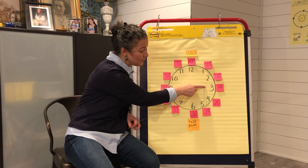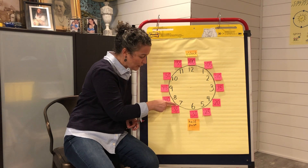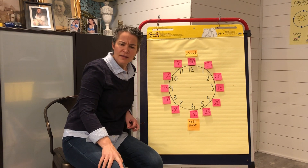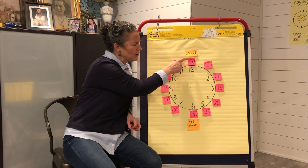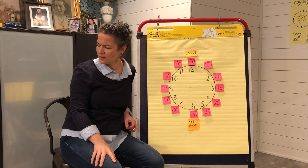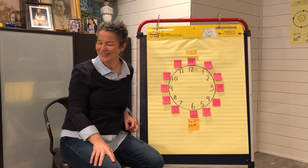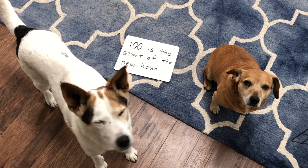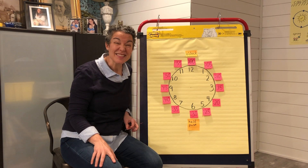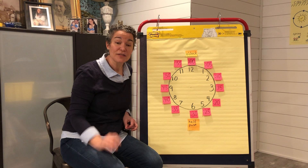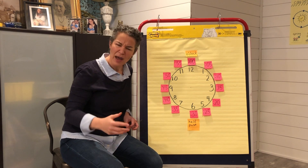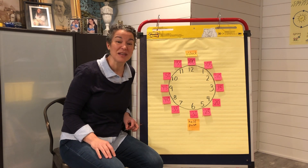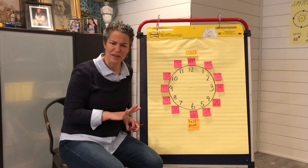Ready? Here we go: 5, 10, 15, 20, 25, 30, 35, 40, 45, 50, 55, 60. And it doesn't say 60 up here — it says zero, zero. Why? Penny says it says zero, zero because that's the start of the new hour. How many minutes are in an hour? There are 60 minutes in an hour. So we know the basics. Bravo.